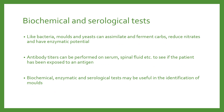When identifying yeast or molds, you can do a number of different tests. Like bacteria, molds and yeast can assimilate and ferment carbohydrates, reduce nitrates, and have enzymatic potential. You can do antibody titers on serum or spinal fluid to see if the patient has been exposed to an antigen — especially relevant for Cryptococcus neoformans in HIV patients using serial dilutions of CSF. You can also perform biochemical, enzymatic, and serological tests. However, the gold standard for identifying fungi is lactophenol cotton blue viewed under the microscope.